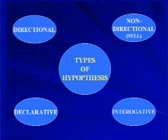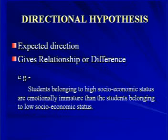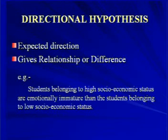The types are: directional, non-directional or null hypothesis, and declarative or interrogative hypothesis. Directional hypothesis shows the expected direction or gives relationship or difference between the variables. For example, the students belonging to high socio-economic status are emotionally more immature than the students belonging to low socio-economic status.